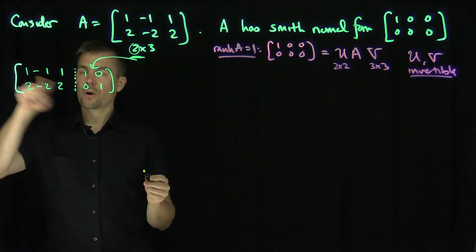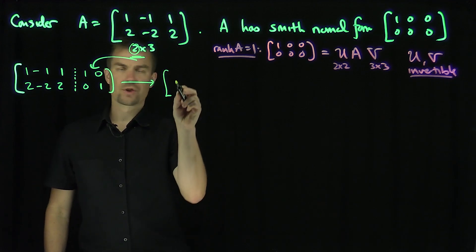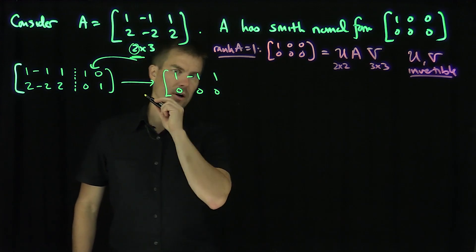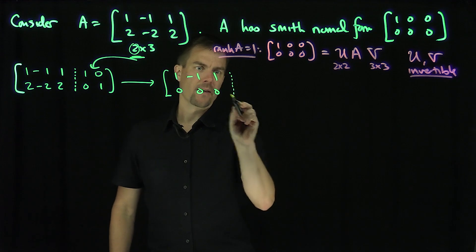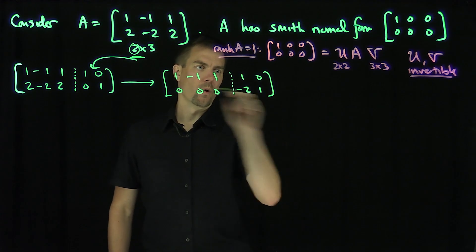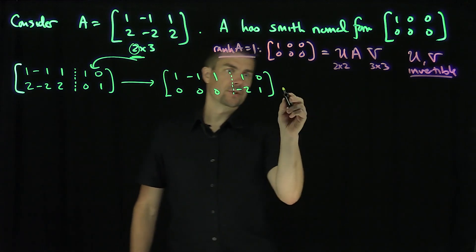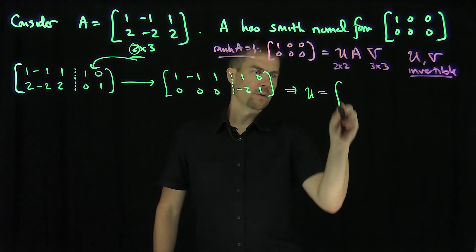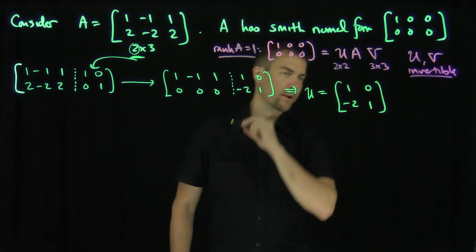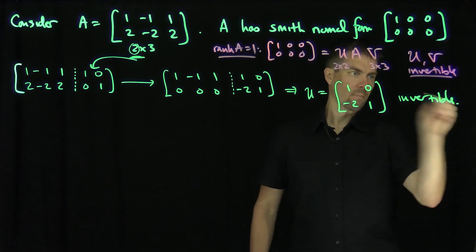I'm going to do negative 2 times row 1 plus row 2. This changes the left part to [[1, -1, 1], [0, 0, 0]], exactly as we expect. And the augmented part becomes [[1, 0], [-2, 1]]. This gives us our matrix U = [[1, 0], [-2, 1]], which is clearly invertible.